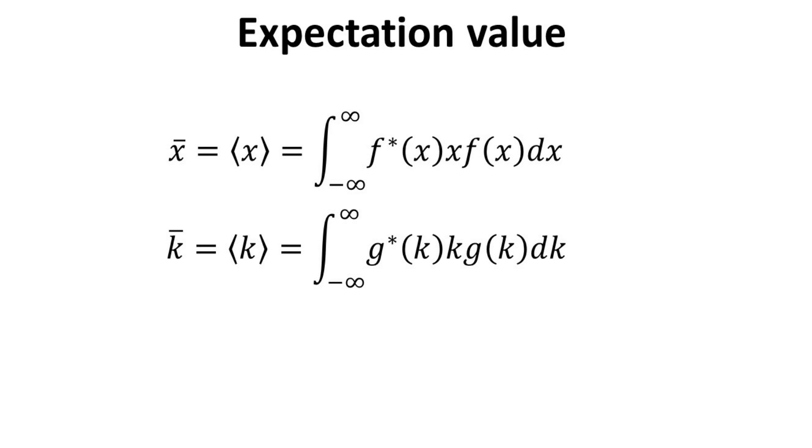The expectation of position x is then given by the integrated product of the probability function with x. Similar expressions can also be written for the wave number k. Without any loss in generality, we shall define the variables x and k such that their expectation value are zeros.